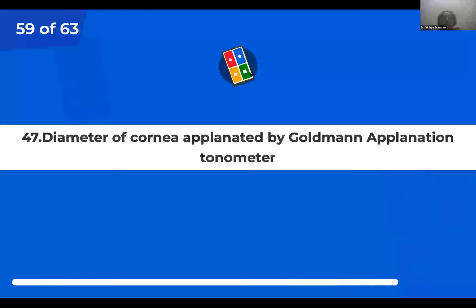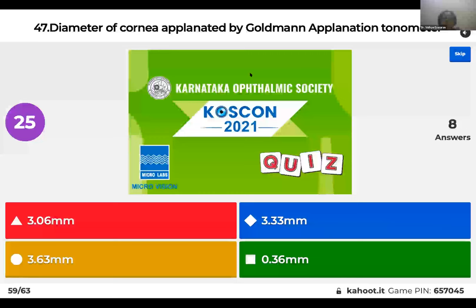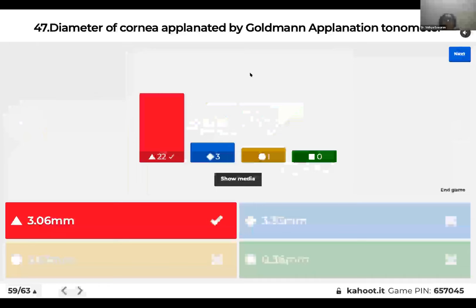Question 47: Diameter of cornea applanated by a Goldman applanation tonometer is 3.06 mm, 3.33 mm, 3.63 mm, or 0.36 mm? The right answer is 3.06 mm. The area applanated is 7.354 mm² (pi × d² / 4).